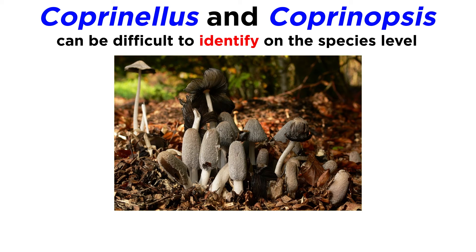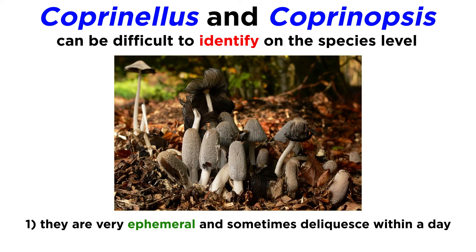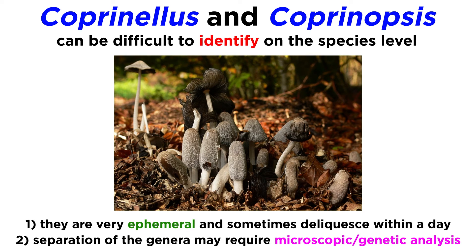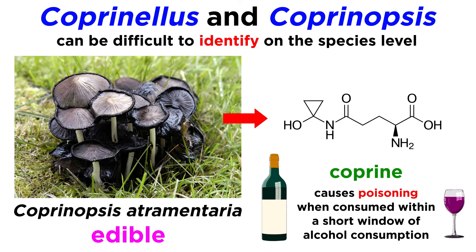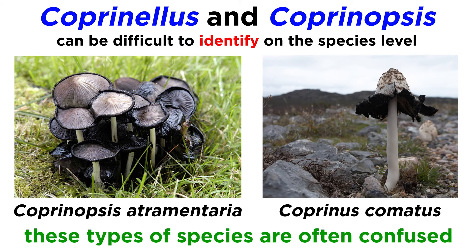Identification on the species level is quite difficult for two reasons. The first is that these mushrooms are extremely fragile and ephemeral — over a single day, some species will fruit, deliquesce, and reduce to almost nothing, making it quite difficult to gather them as specimens. Second, the separation of Coprinopsis and Coprinellus species may require microscopic and genetic analysis. Coprinopsis atramentaria, or the common ink cap, is known to be edible, but contains a molecule called coprine that causes poisoning when consumed within a two to three day time period of drinking any form of alcohol. This has caused some confusion with Coprinus comatus, the shaggy mane mushroom discussed in the Agaricaceae lecture, which does not contain coprine and does not lead to alcohol-induced poisonings.